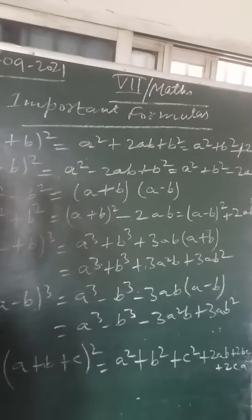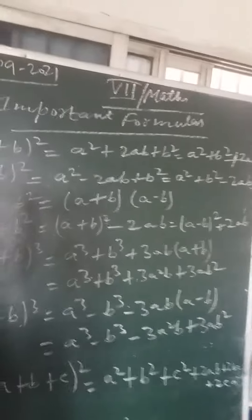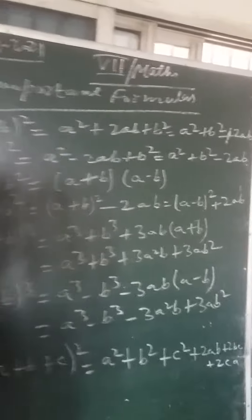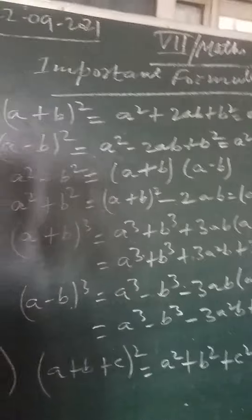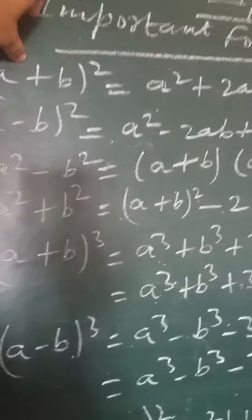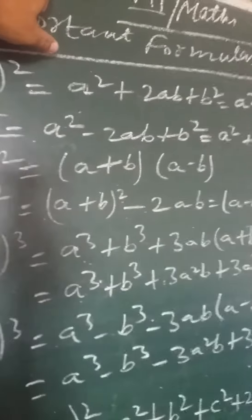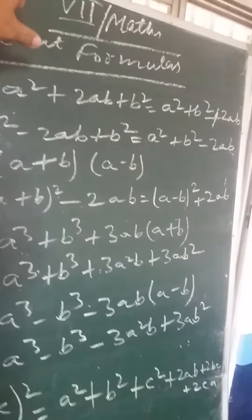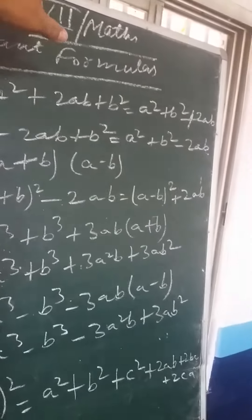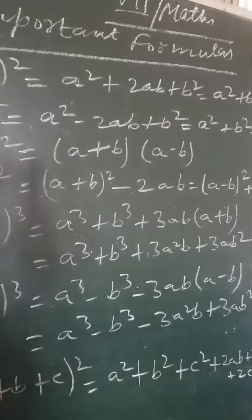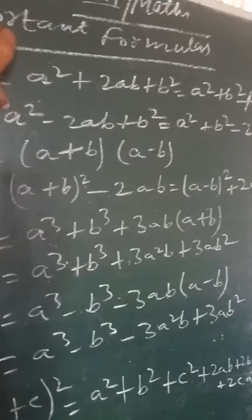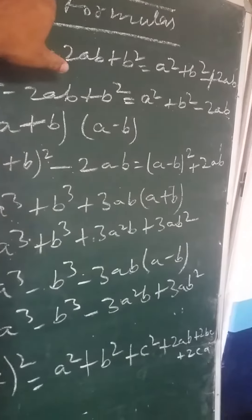Stop, stop talking one second — there are some mathematical formulas you can learn and memorize. (a + b) whole square equals a square plus 2ab plus b square. (a - b) whole square equals a square minus 2ab plus b square.